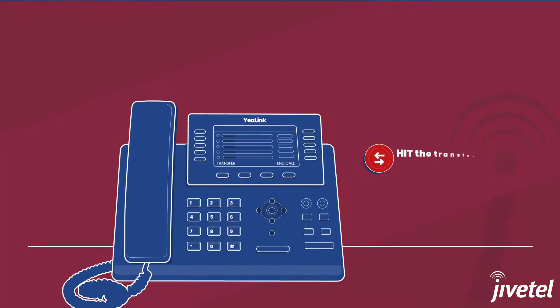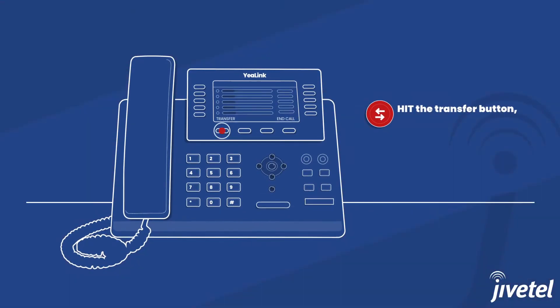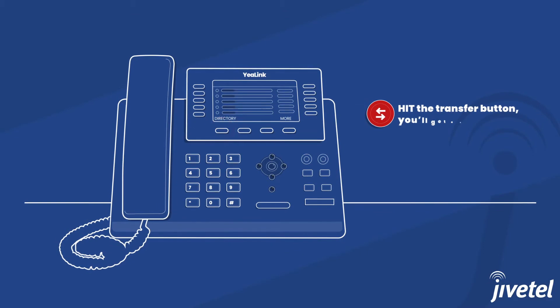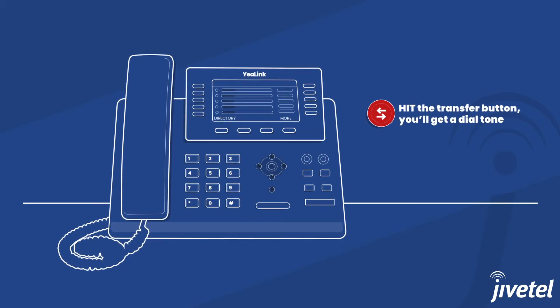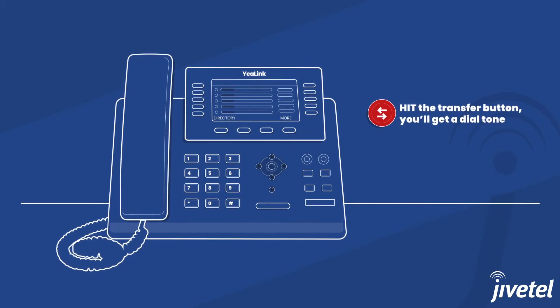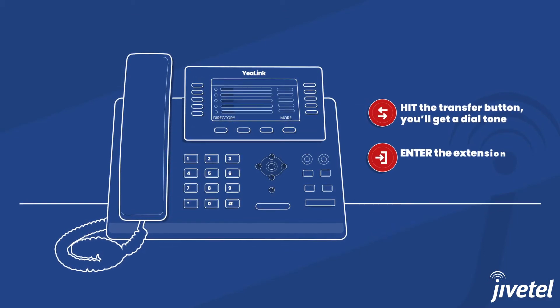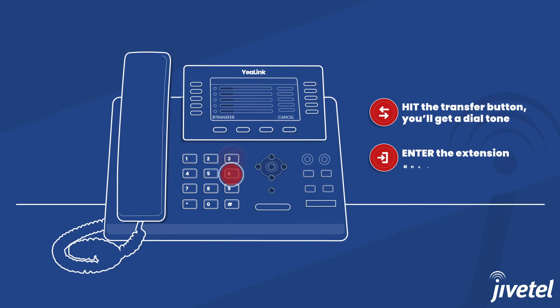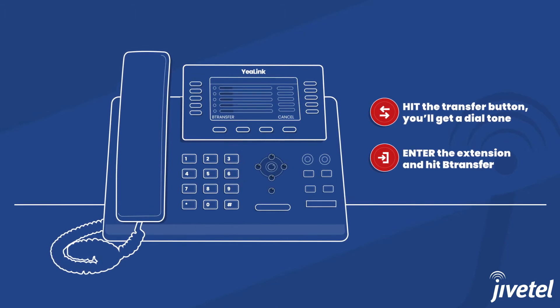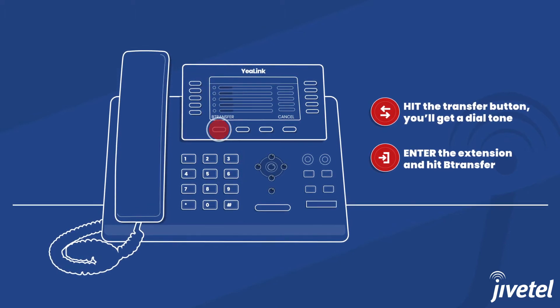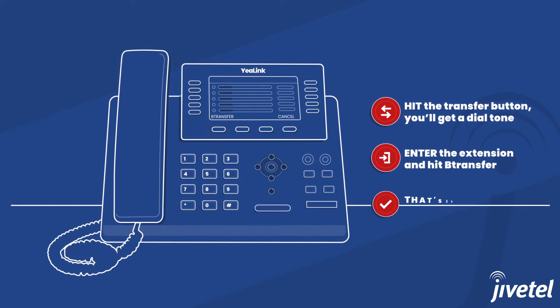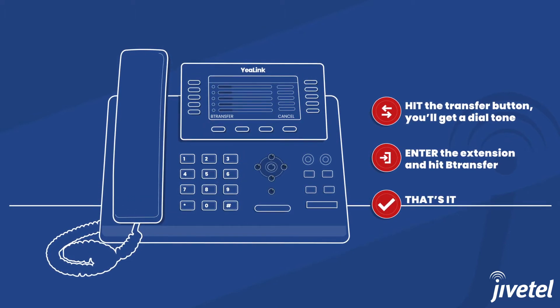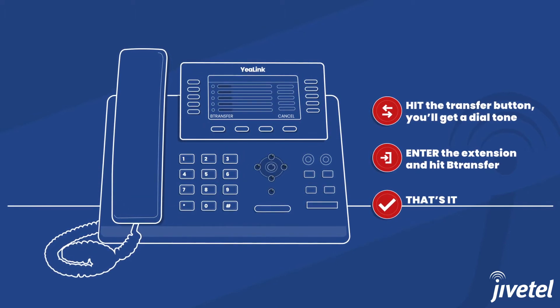Hit the transfer button. You'll get a dial tone. Enter the billing extension and hit transfer. That's it. The phone is now ringing at the right extension.